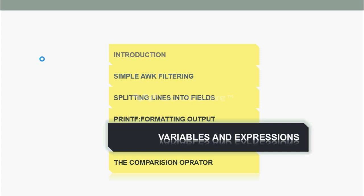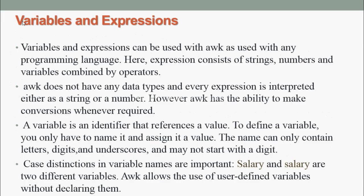Next, we are going to study variables and expressions. Variables and expressions can be used with AWK as with any programming language. Expression consists of strings, numbers, and variables combined by operators. AWK does not have any data types and every expression is interpreted either as a string or a number. However, AWK has the ability to make conversion whenever required. A variable is an identifier that references a value. To define a variable, you only have to name it and assign it a value. The name can only contain letters, digits, and underscores and may not start with a digit.